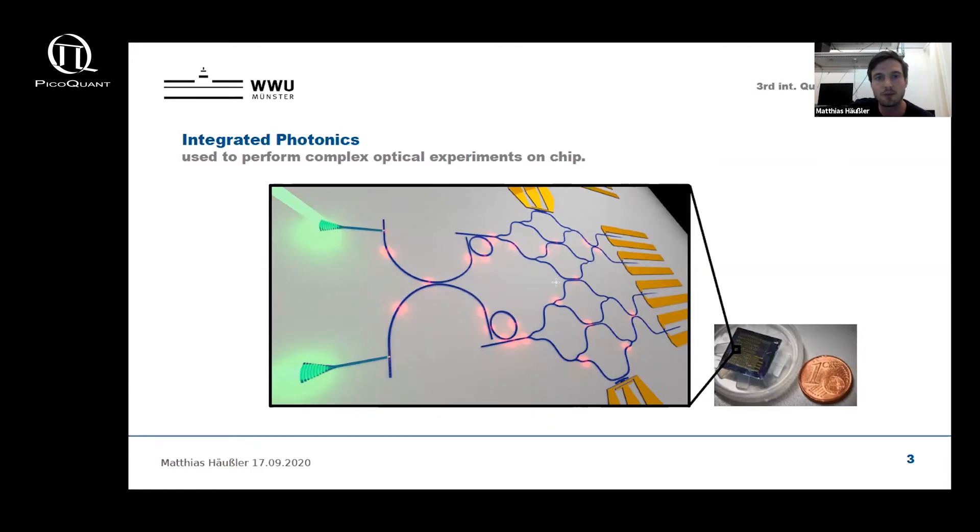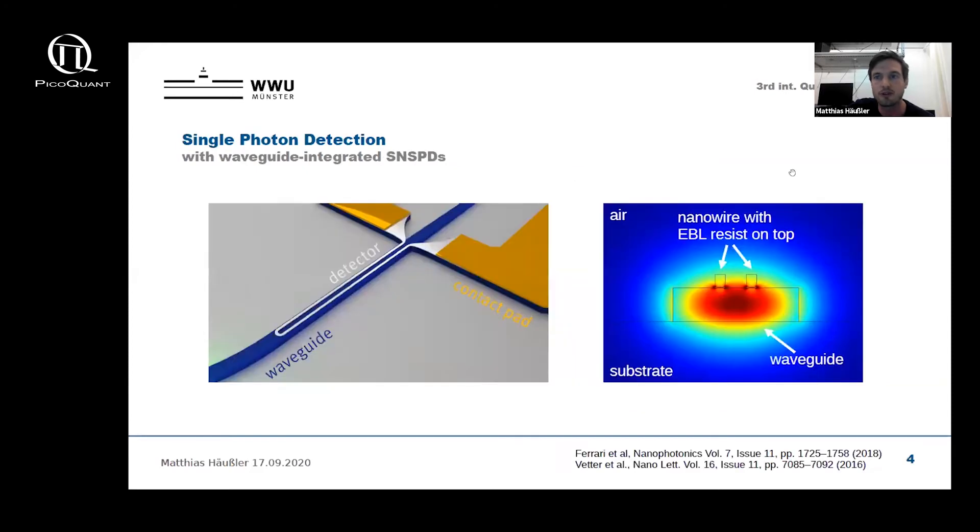With this, let me go one step further to the single photon detectors. As we've heard in the previous talk, superconducting nanowire single photon detectors are promising candidates to fulfill a lot of requirements of different applications, including for example the QKD experiment that I introduced two slides before. On top of that, they can be integrated in nanophotonic circuits, which makes them quite powerful.